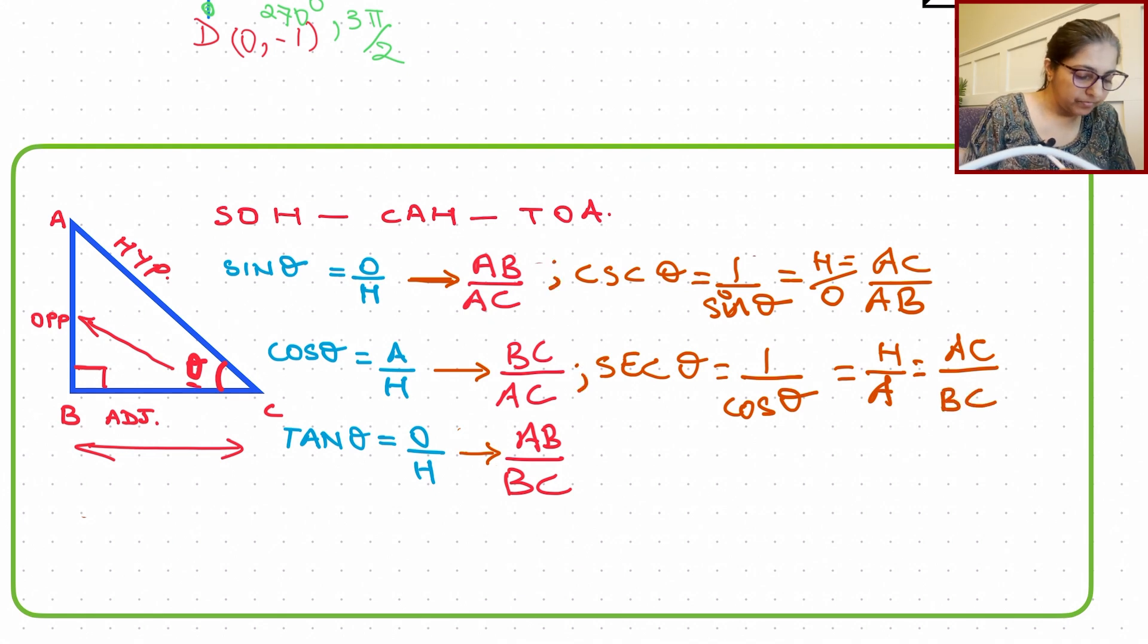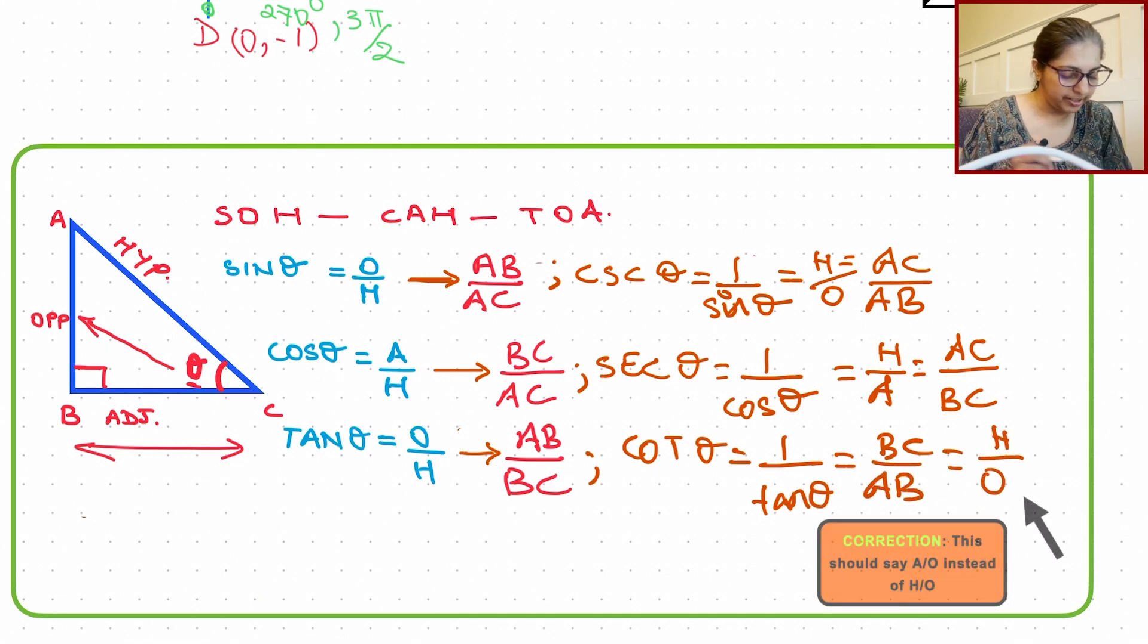Now, the last one, which is going to be cotangent, meaning cot of theta is nothing but the reciprocal of tangent of theta, equal to BC divided by AB, or we can also say adjacent divided by the opposite.